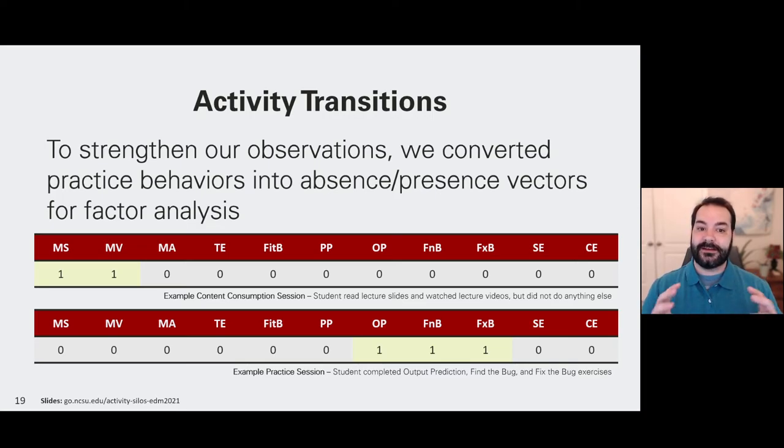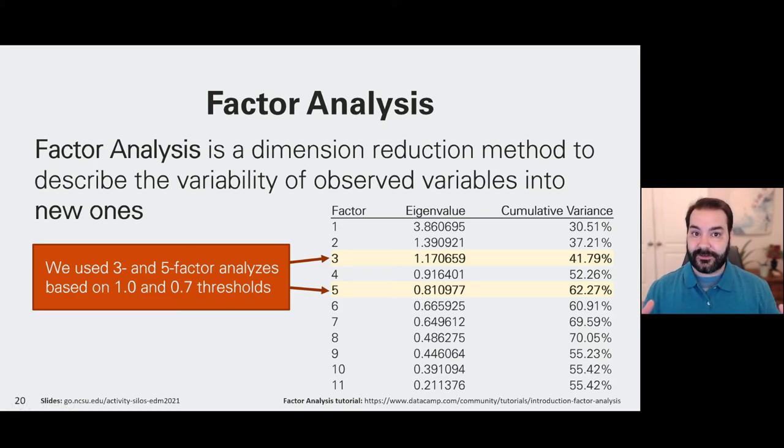To start, we wanted to look at each one of the sessions a student may have, and in particular, the presence or absence of an activity. For example, this first graphic is showing that this particular session had Moodle slides and Moodle videos and nothing else. The second activity shows that they had output prediction, find the bugs and fix the bugs, and nothing else. A factor analysis is a dimension reduction method that looks at all of the observed variables and then attempts to create new ones based on that behavior. And for our eigenvalues, we chose to use a three- and five-factor analysis.